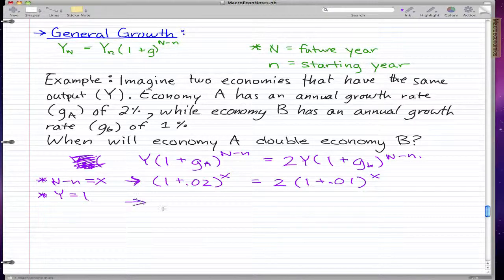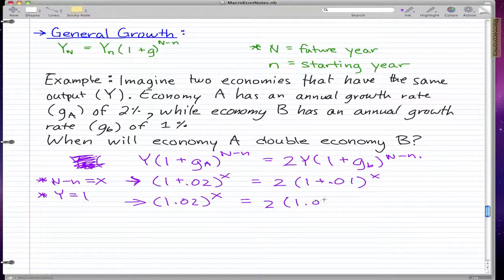Now adding those up, we get 1.02 to the X equals 2 times 1.01 to the X. And what we have to do now is find X. That's all we need to find in order to find out how long it'll take for economy A to double economy B.